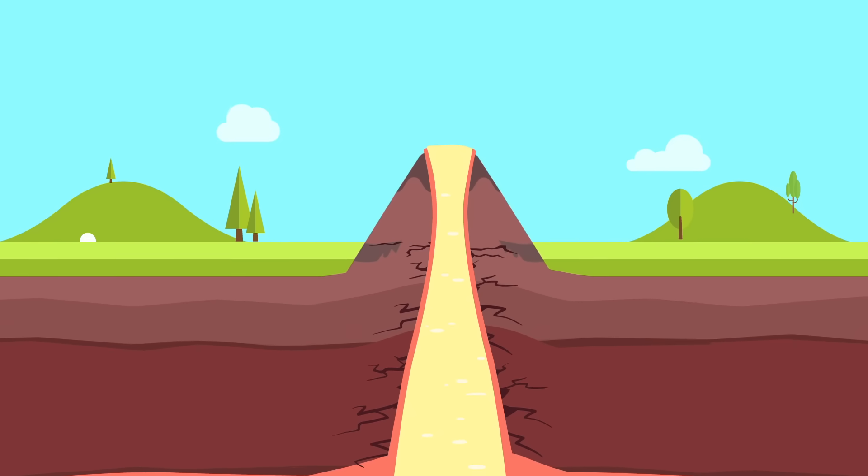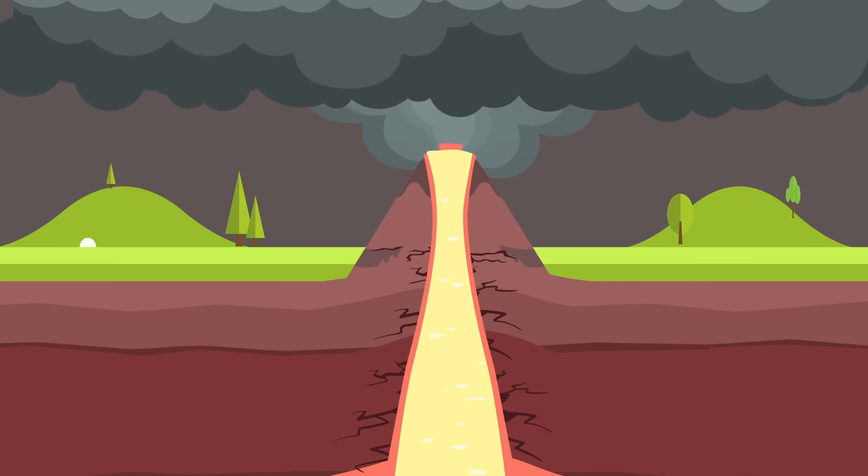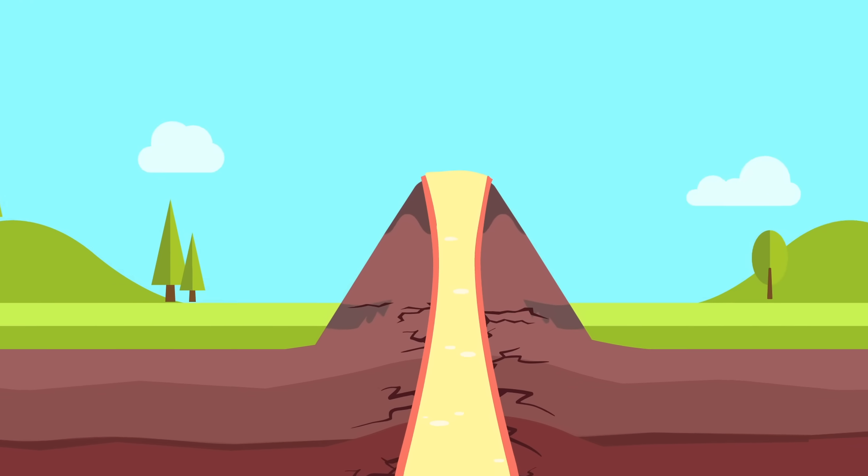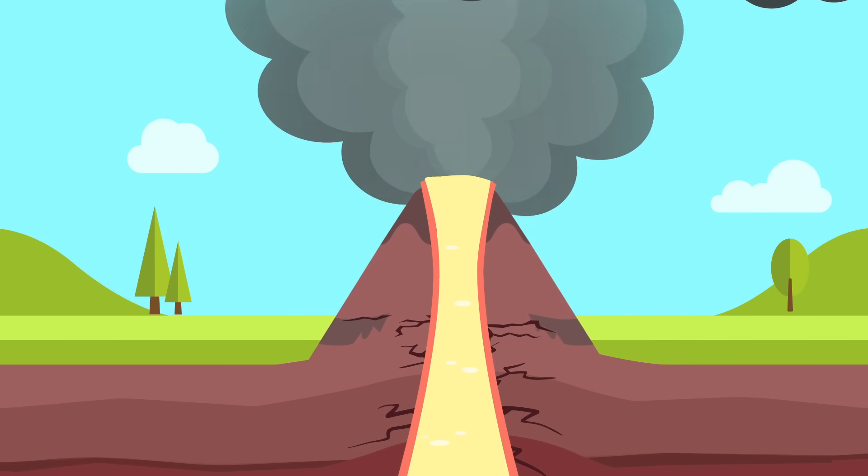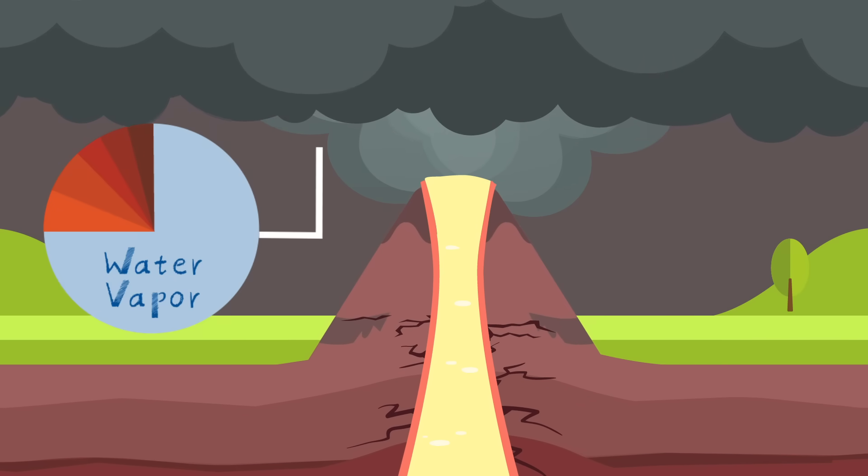In what we call volcanic activity, magma created deep inside the Earth rises up through cracks or weak points in the crust, erupting out of the Earth's surface. In a volcanic eruption, the first thing to be released is gas. Most of this volcanic gas is water vapor, but there are also smaller amounts of other gases, such as carbon dioxide and sulfur dioxide.